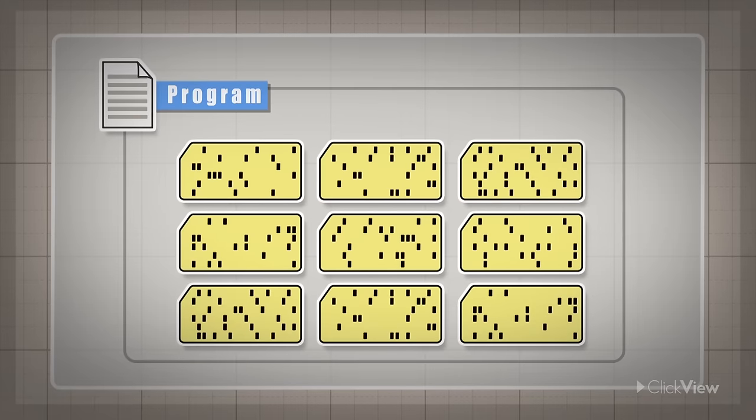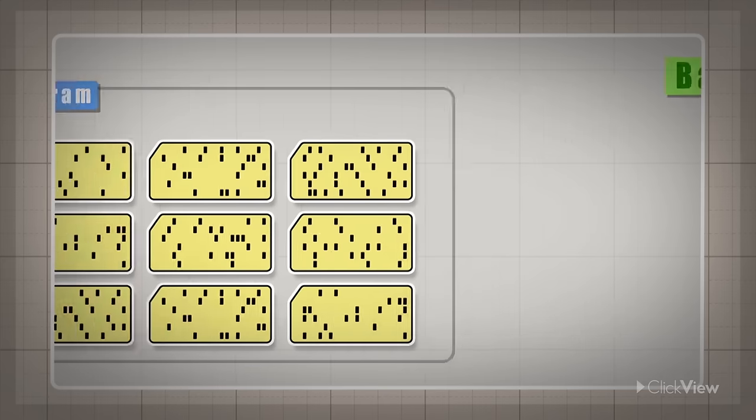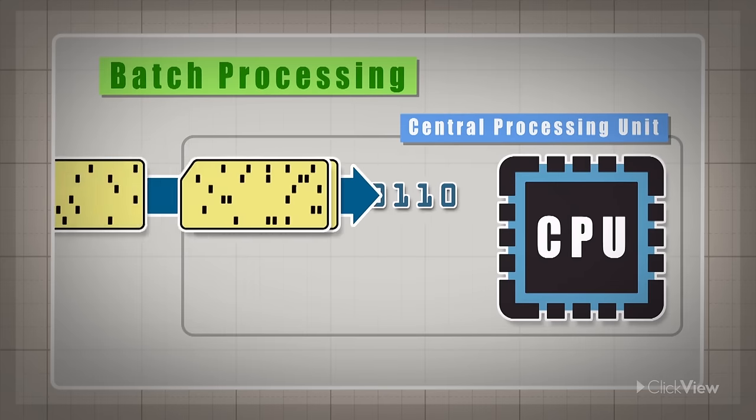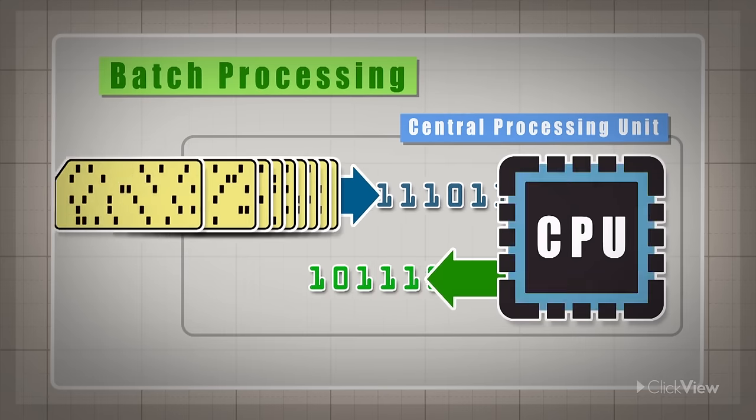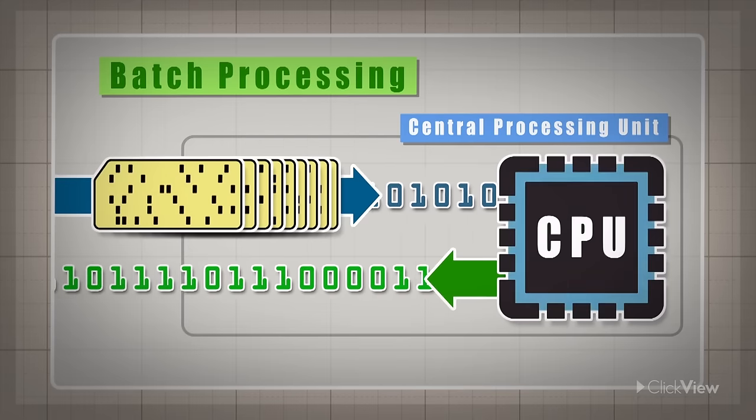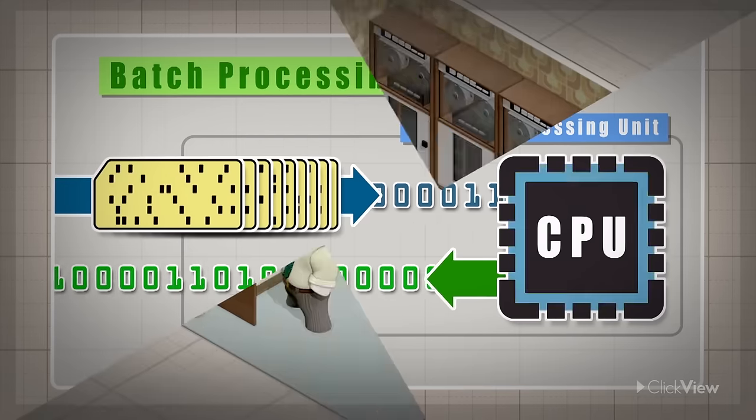Programs were written on punch cards, pieces of cardboard with holes. These were fed one at a time into the Central Processing Unit, or CPU, and enabled the earliest form of computer batch processing.